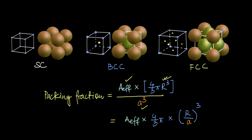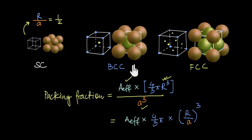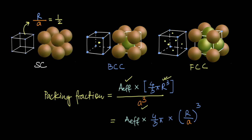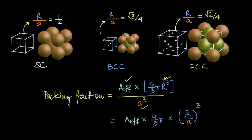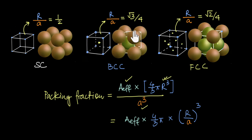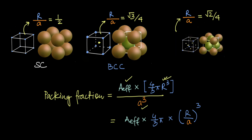For the simple cubic unit cell, the r/a ratio is 1/2. What this means is that no matter what size of atoms you take, as long as they are arranged in simple cubic form, the ratio of the atomic radius to the edge length will always be the same. For BCC it is √3/4, and for FCC it is √2/4.